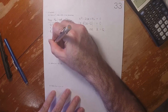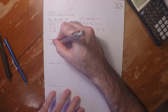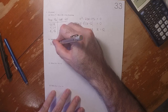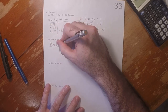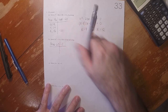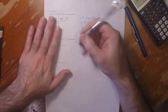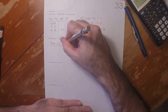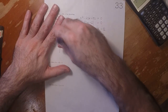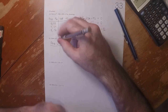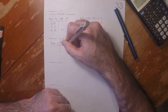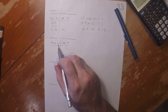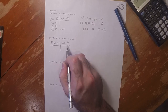Now we want to solve this one by factoring. We want two numbers whose product is 2 times 30, which is 60, and whose sum is negative 17. Because the product is positive, we need both positive or both negative, and because the sum is negative, they both need to be negative.